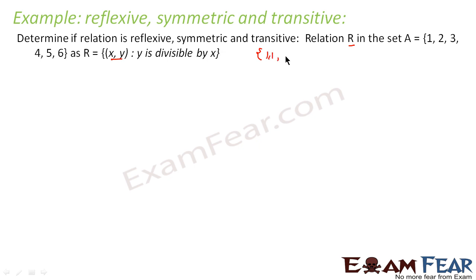(1,1), right? 1 is divisible by 1. (1,2) - 2 is divisible by 1. (1,3), (1,4), (1,5), (1,6), right? Again, with 2, we have 2 will divide 4, yes, (2,4), (2,6). With 3 it is 3 by 6, yes.